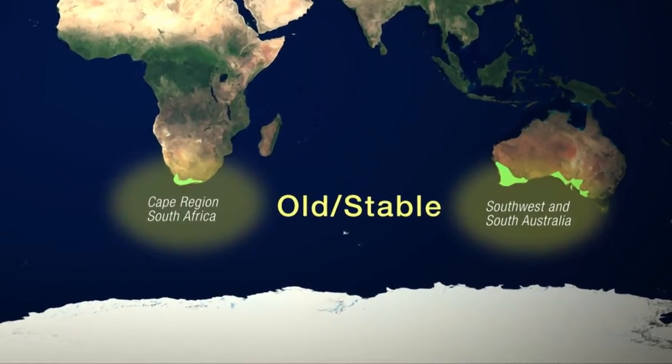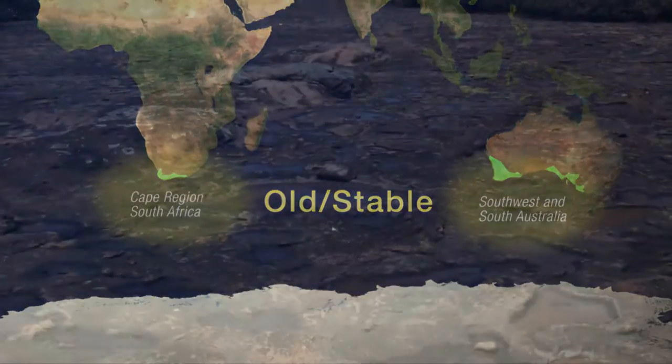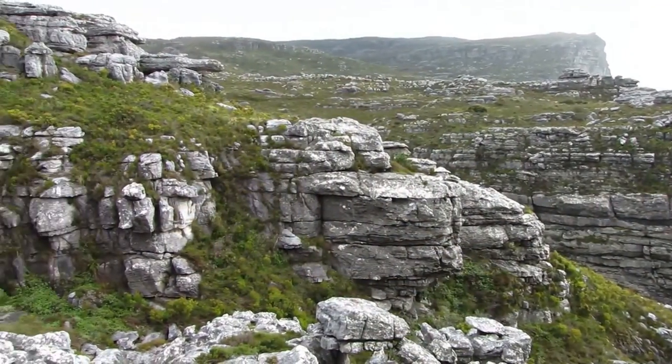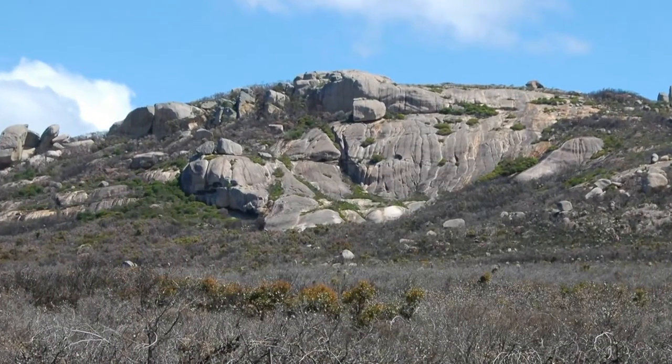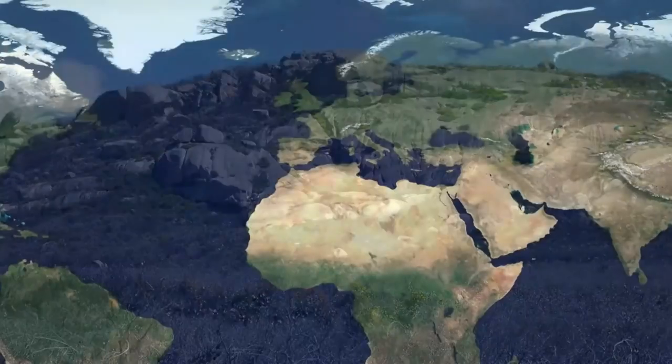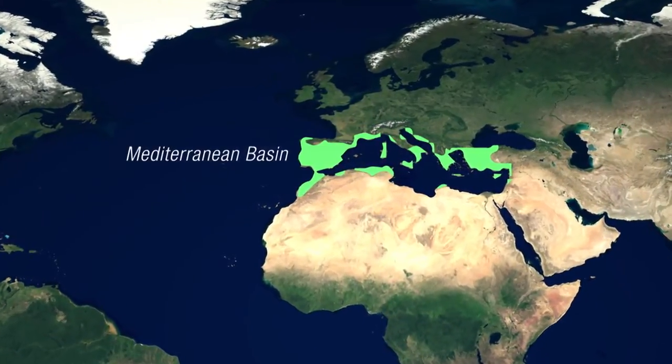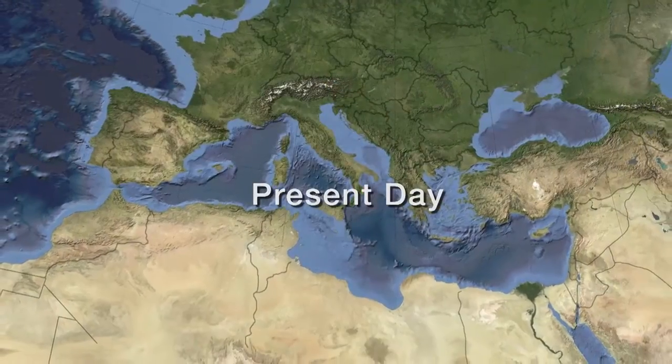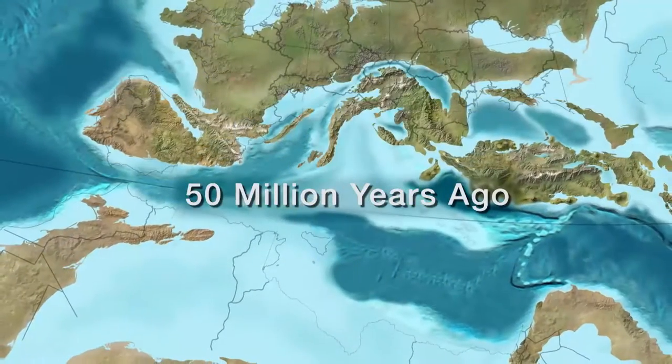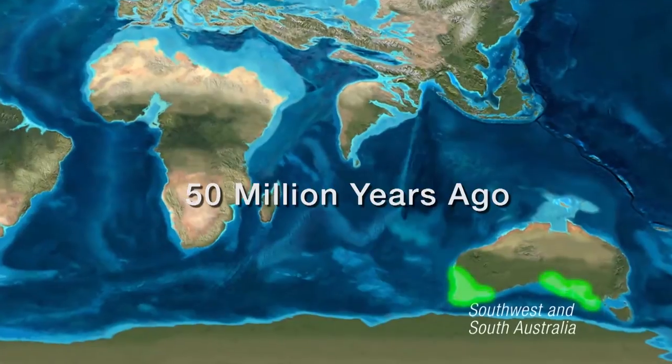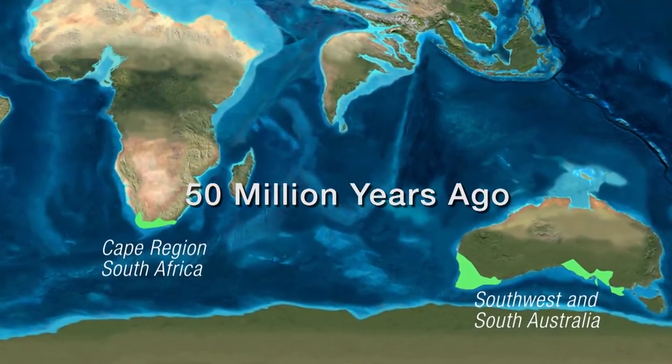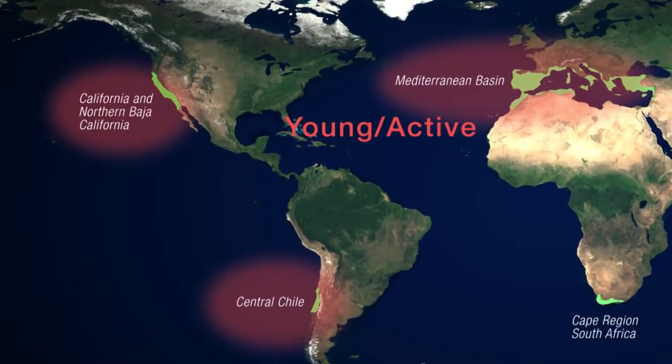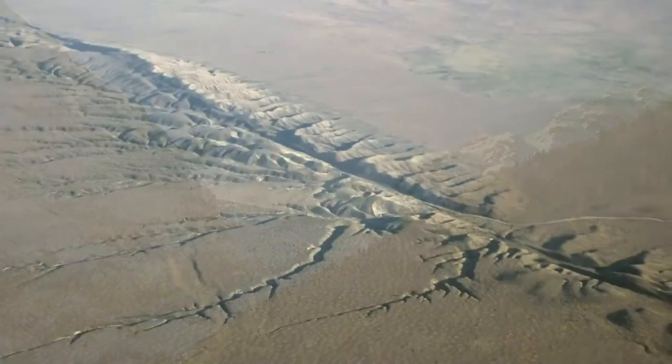The Cape region of South Africa and Southwest and South Australia are both ancient landscapes with infertile soils. These regions have experienced relatively little geologic disruption for 120 million years. By contrast, the Mediterranean basin, California, and central Chile are younger landscapes. Large portions of these areas were inundated by shallow seas. When Southwest Australia and the Cape region of South Africa were already dry land. In more recent times, these younger landscapes have been further altered by mountain building, glaciers, and earthquakes.